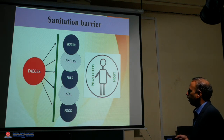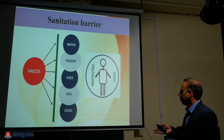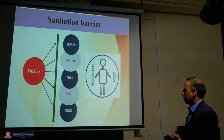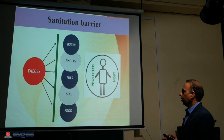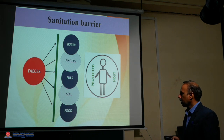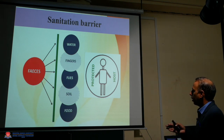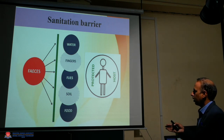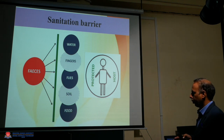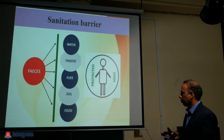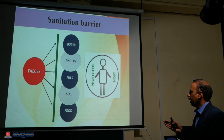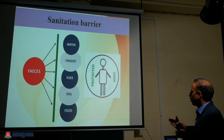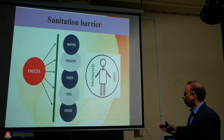The previous slide showed how disease spreads through excreta contamination. The barrier means we should not allow feces to contact things like water, fingers, flies, soil, and food. The feces should not come into contact with those things, and then the human body will be protected.